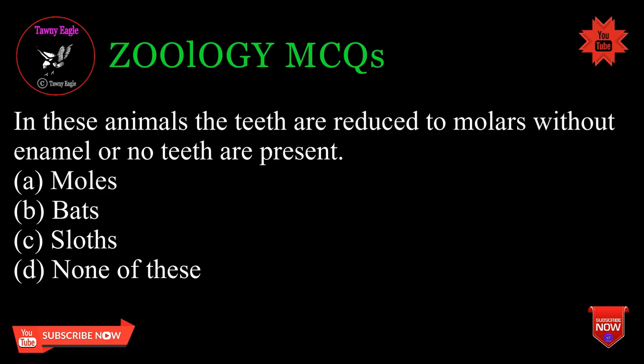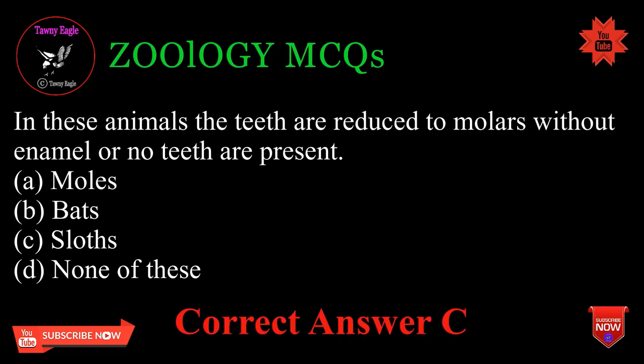In these animals the teeth are reduced to molars without enamel, or no teeth are present: A. Moles, B. Bats, C. Sloths, D. None of these. Correct answer: C.